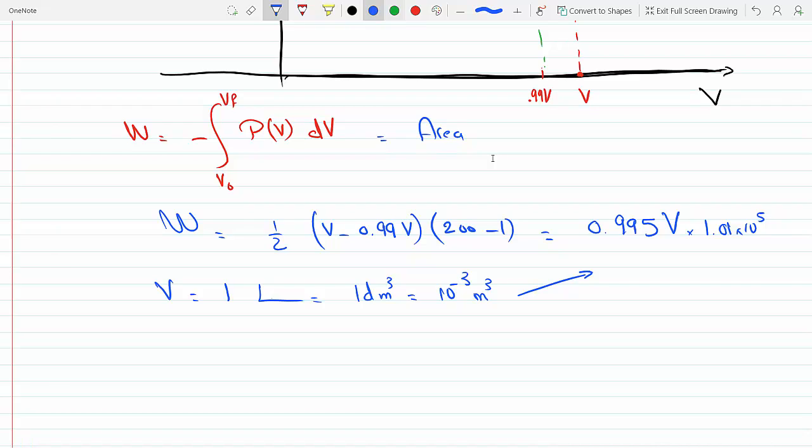0.995 times 10 to the minus 3 times 1.01 times 10 to the fifth.